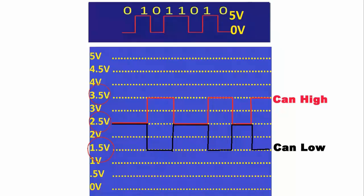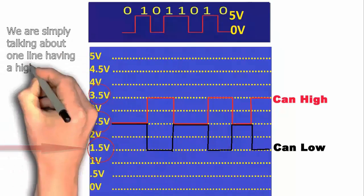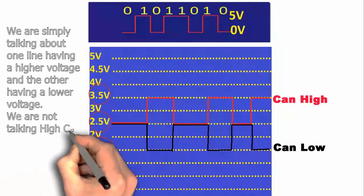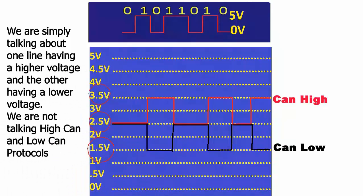Now first and foremost I do not want anyone being confused when we are talking about HI-CAN line, that being the line that goes to 3.5 volts, and the LO-CAN line, that being the line that gets pulled down to 1.5 volts. We are simply talking about one line having a higher voltage and one line having a lower voltage.